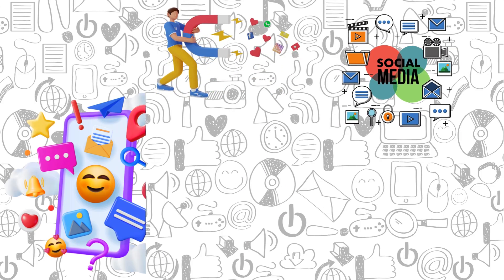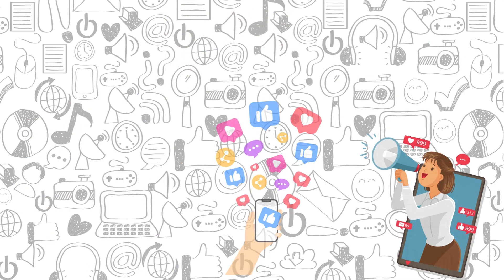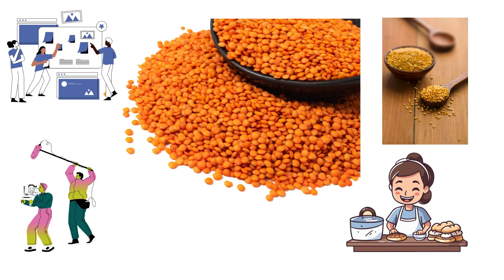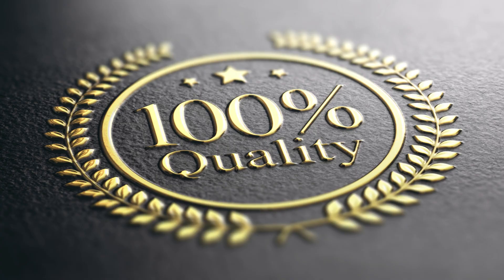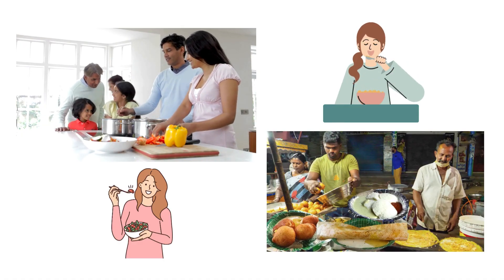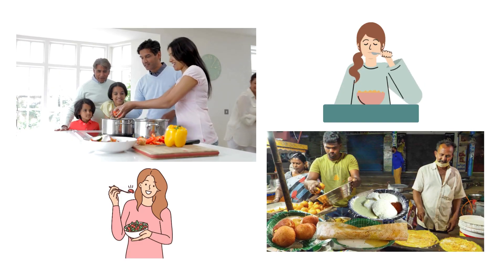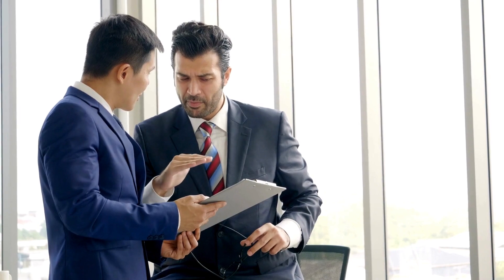On online platforms like Instagram, Facebook, and YouTube, tell stories that families will like. Share fun videos of how you make the pulses dal, showing what's exciting for families and emphasizing quality. Work with influencers who are well-liked by home cooks, restaurants, food manufacturers, hotels, hostels, and retailers, and who can genuinely talk about your product.